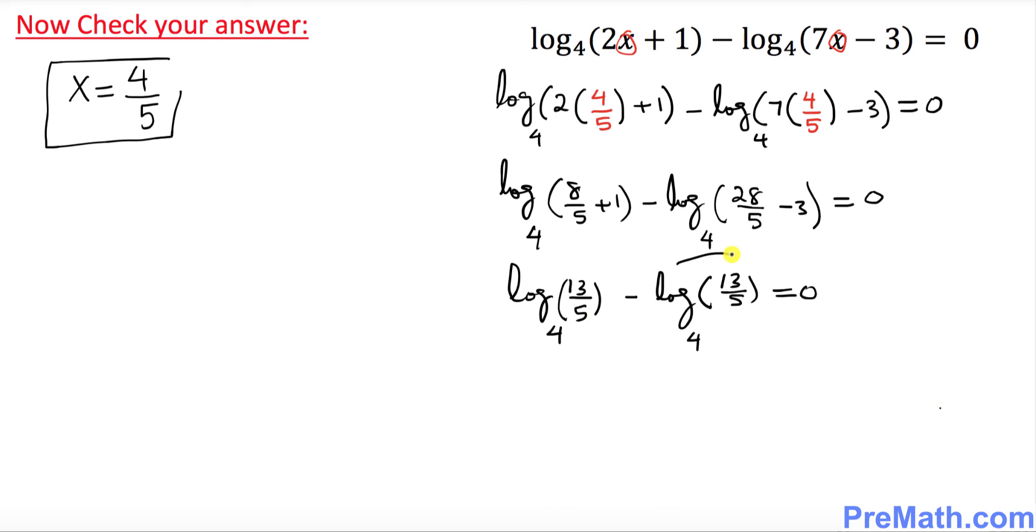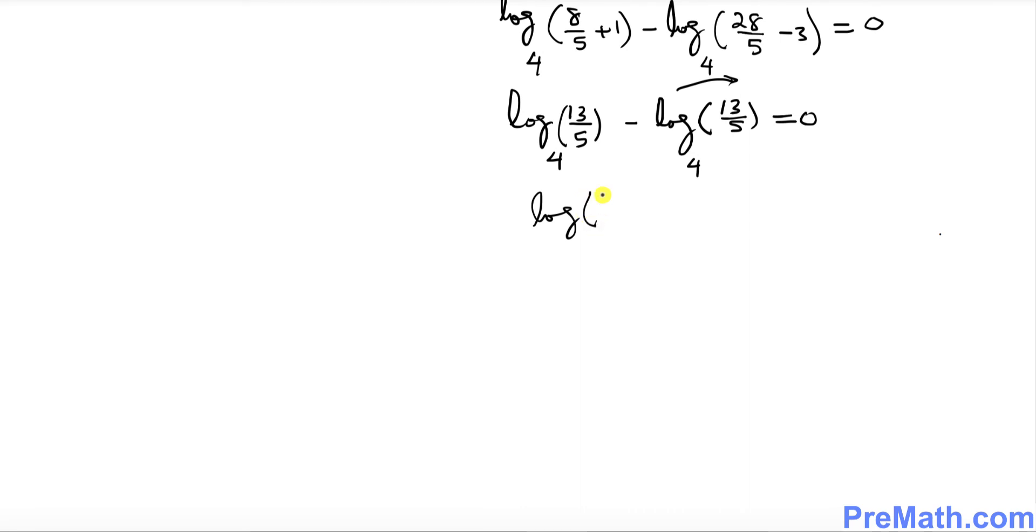Or simply if you want to move it on this side. So that means log of 13 over 5 with a base 4 equals, once you move it on the other side it becomes positive, log of 13 over 5 with a base 4. Now my question is, is this statement true? So both sides are the same. So that means yes, this statement is indeed true. Thus x equal to 4 over 5 is indeed our solution.